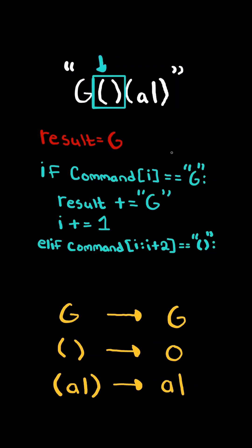Now if the next two characters are brackets, we add o to the result, and increment the index by two.